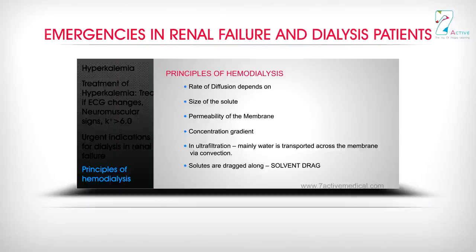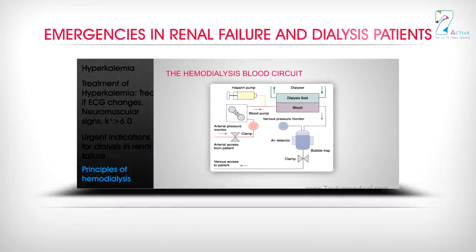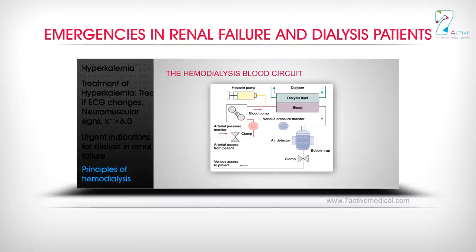In ultrafiltration, mainly water is transported across the membrane via convection, and solutes are dragged along (solvent drag). The hemodialysis blood circuit includes: dialyzer, dialysis fluid, blood, heparin pump, blood pump, clamps, arterial pressure monitor, arterial access from patient, venous pressure monitor, air detector, bubble trap, and venous access to patient.